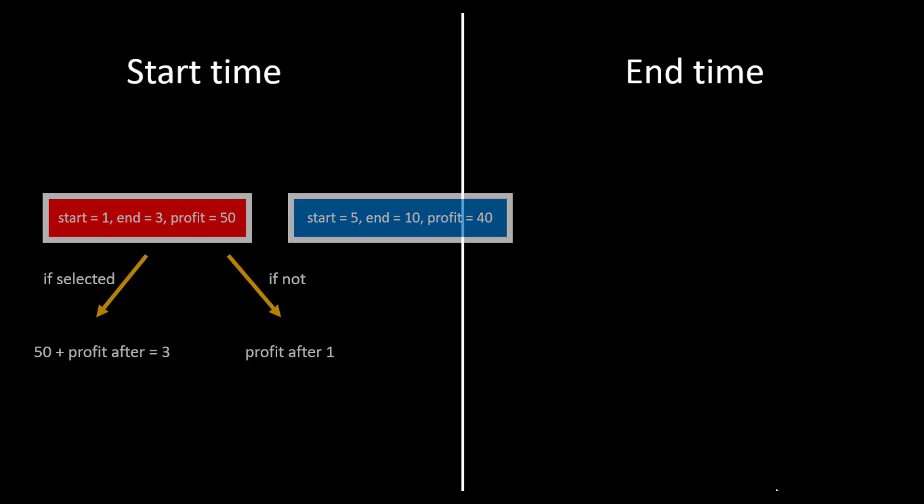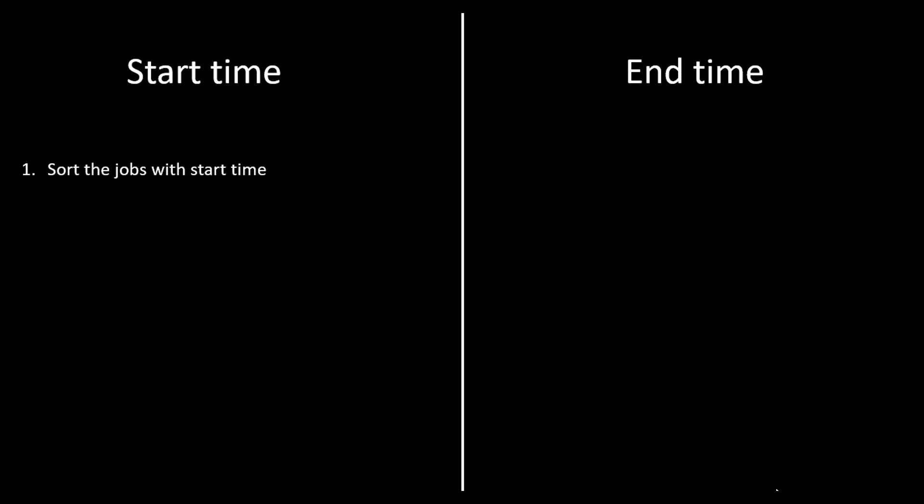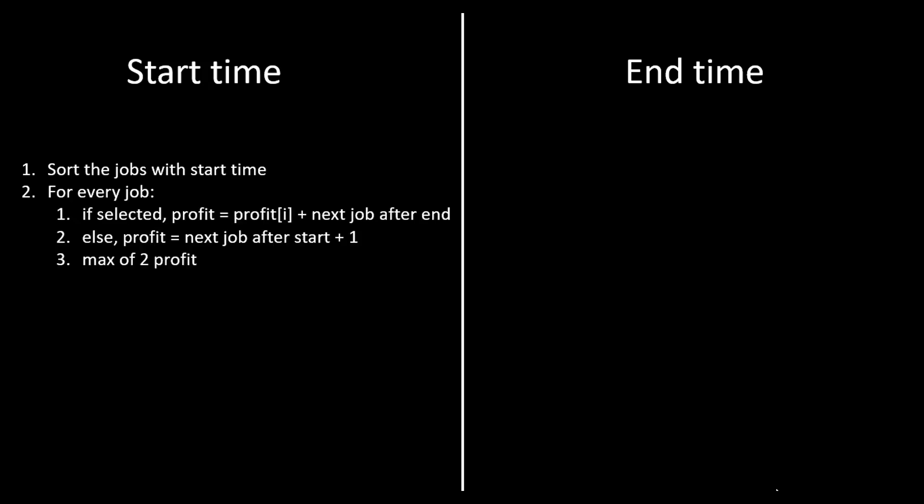If we write that down into a set of instructions: first, sort the jobs by start time, since we process jobs sequentially from smallest to largest start time. For every job there are two scenarios — selected or rejected. If selected, profit becomes profit of job i plus the next job after the end time; else profit becomes the next job after start plus one. The max of the two profits becomes the profit starting with that job. We find the max of all jobs and return it. Now let's turn our attention to solving this using end time.